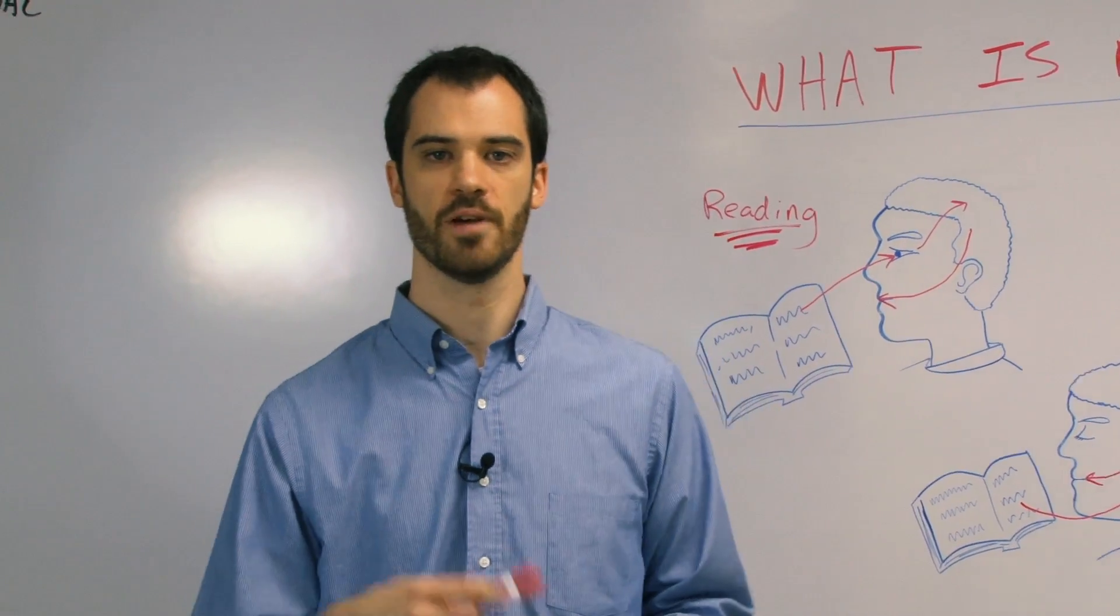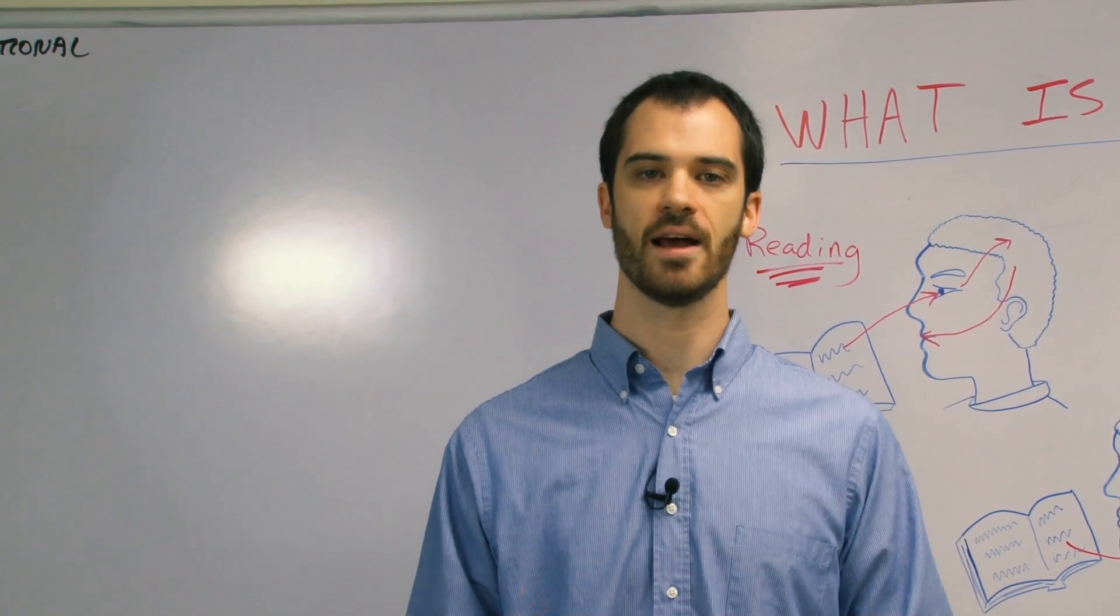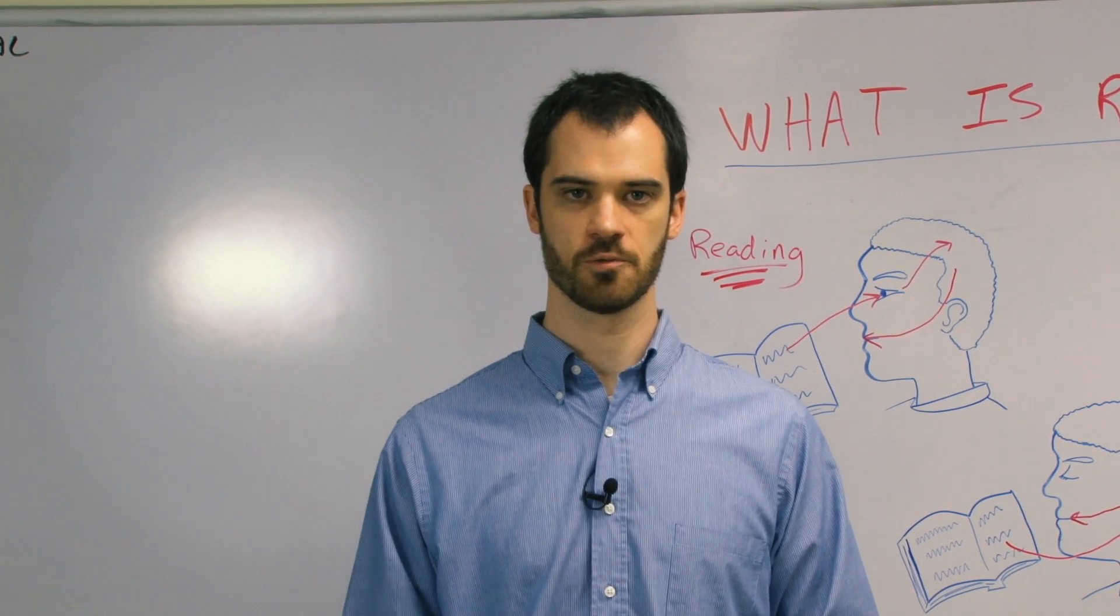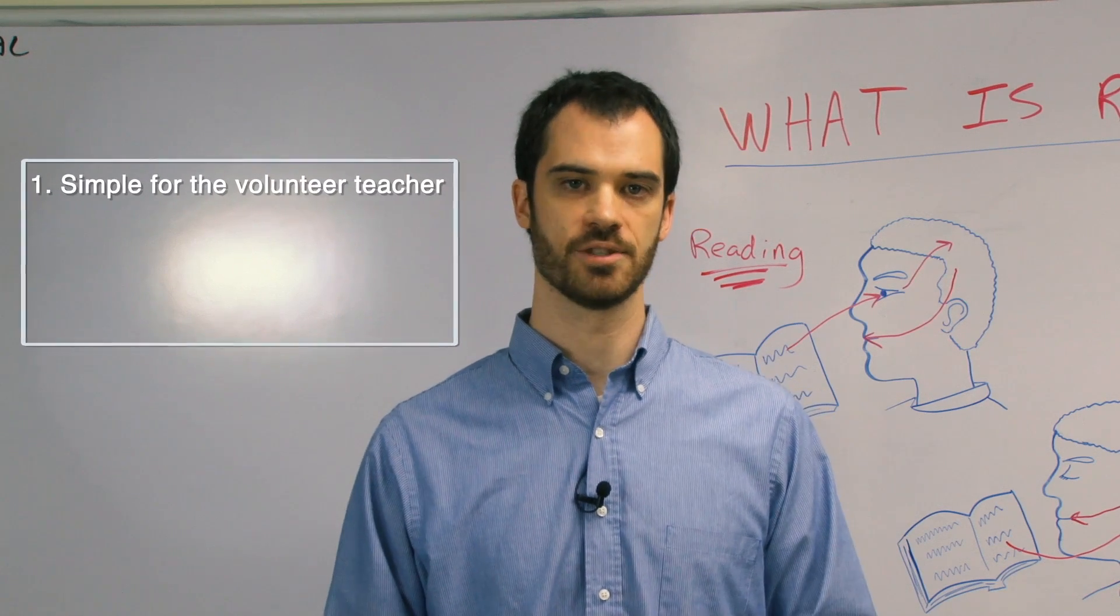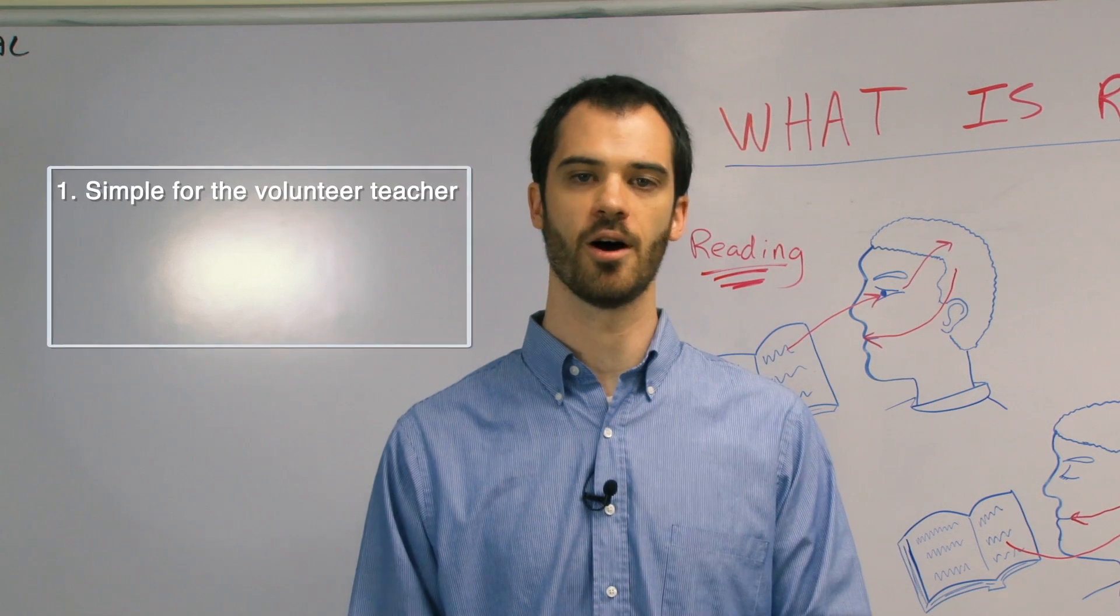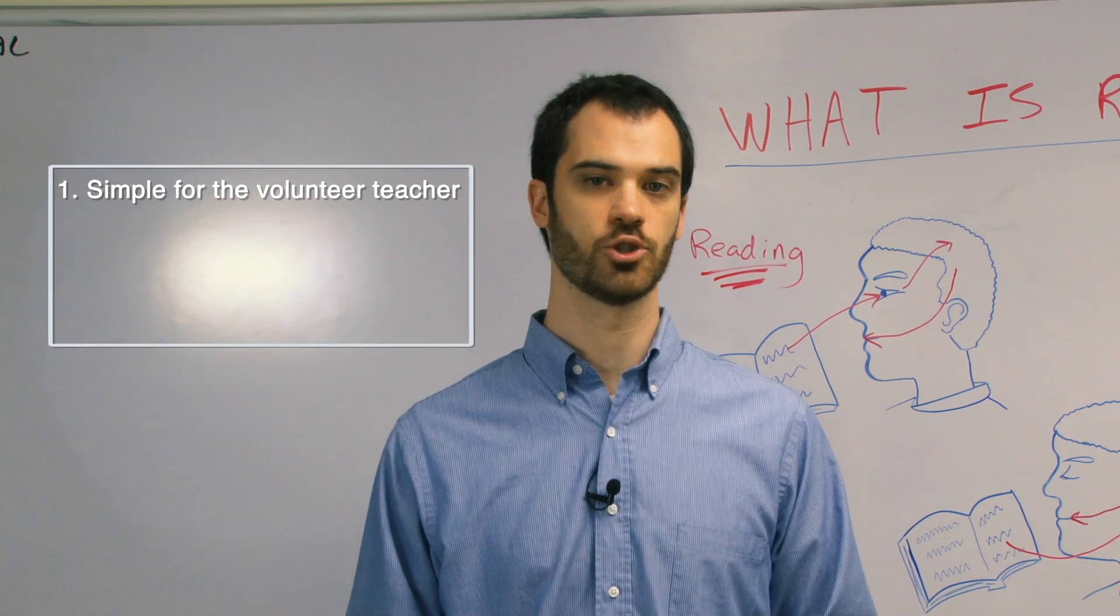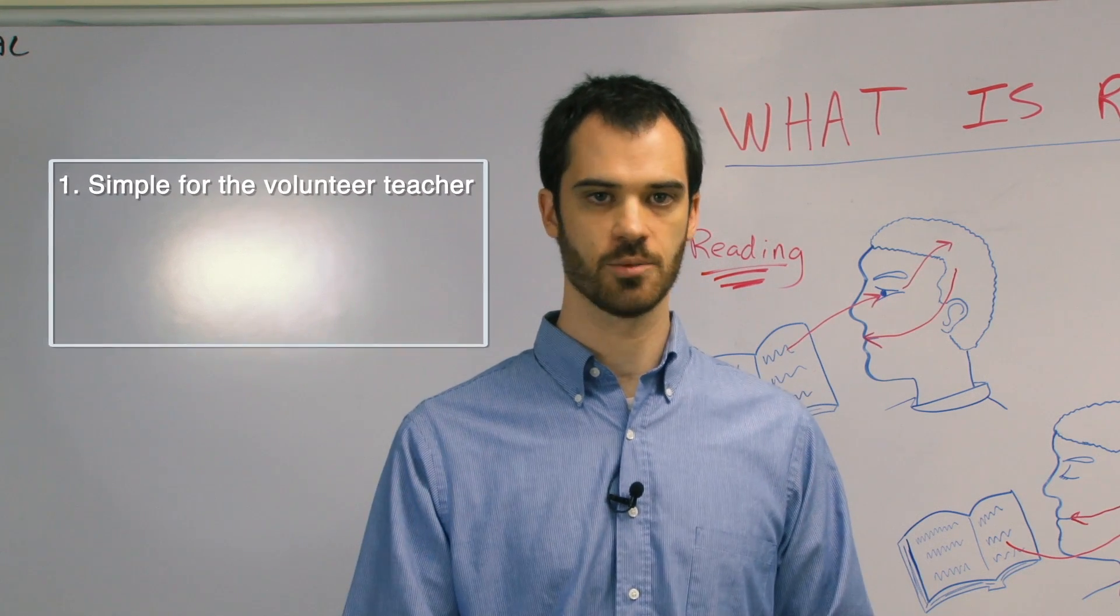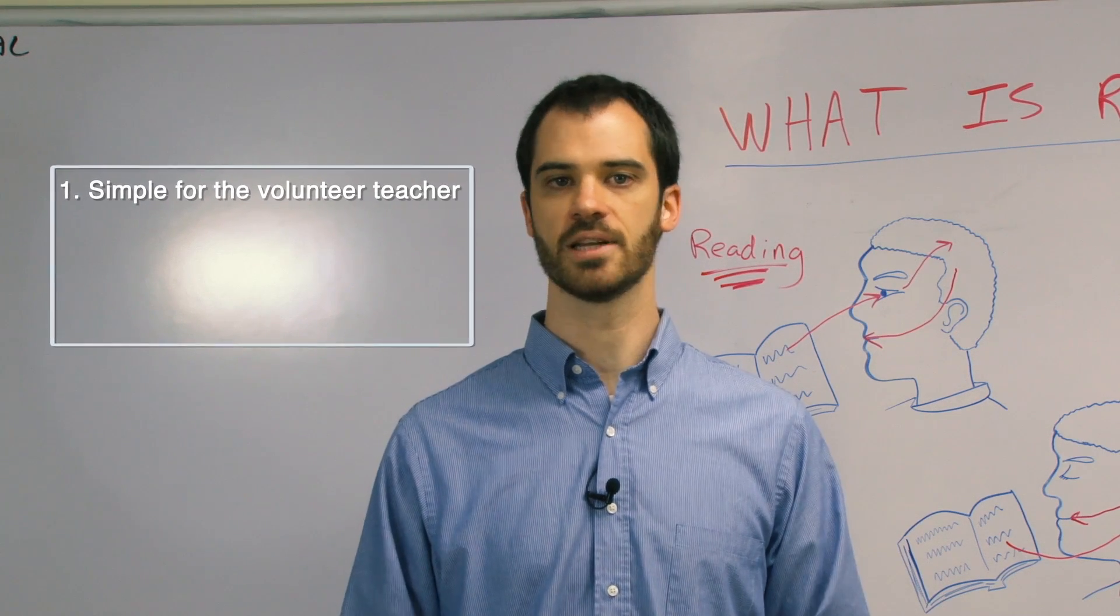So before we move ahead into the five steps and how to teach them, let's just simply review why the LEI method is so simple to use and what distinguishes LEI primers from other literacy primers that are out there. Well, number one, it's simple for the volunteer teacher. As we mentioned earlier, the reading section is taught using a simple method called the five steps. Once these teachers memorize these short steps, they can easily teach any lesson in the primers. So if you learn how to teach lesson one, you can teach lesson eight, nine, twelve, twenty-one, thirty-two. You can teach any lesson.